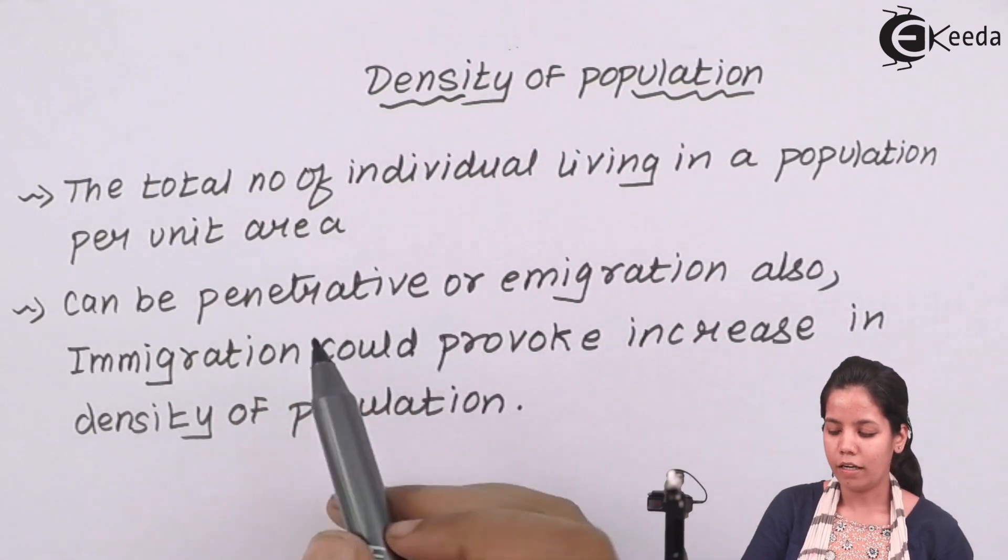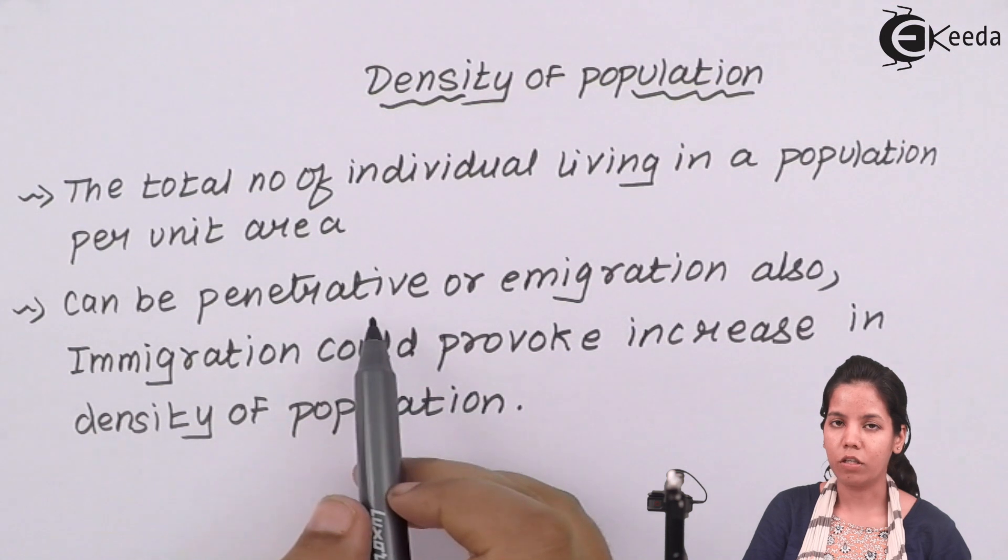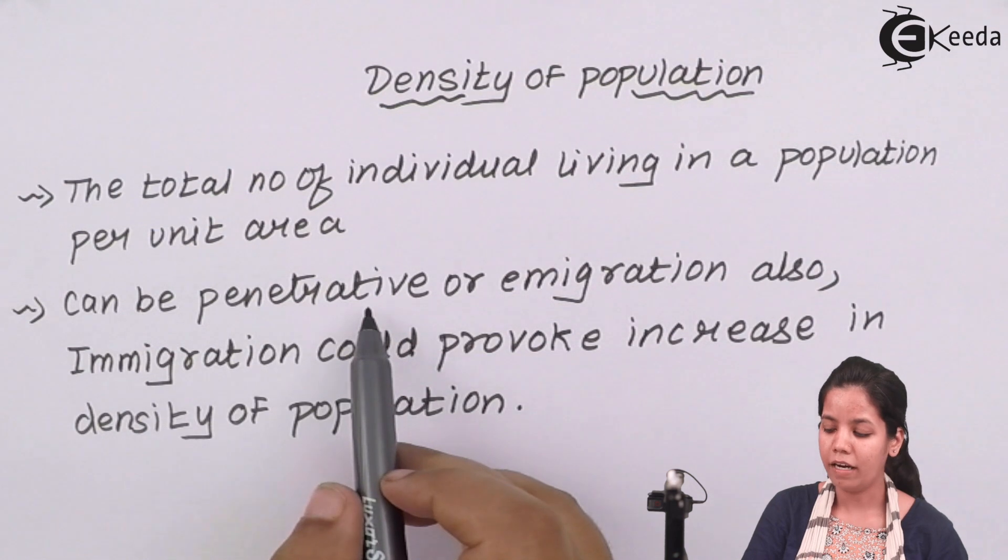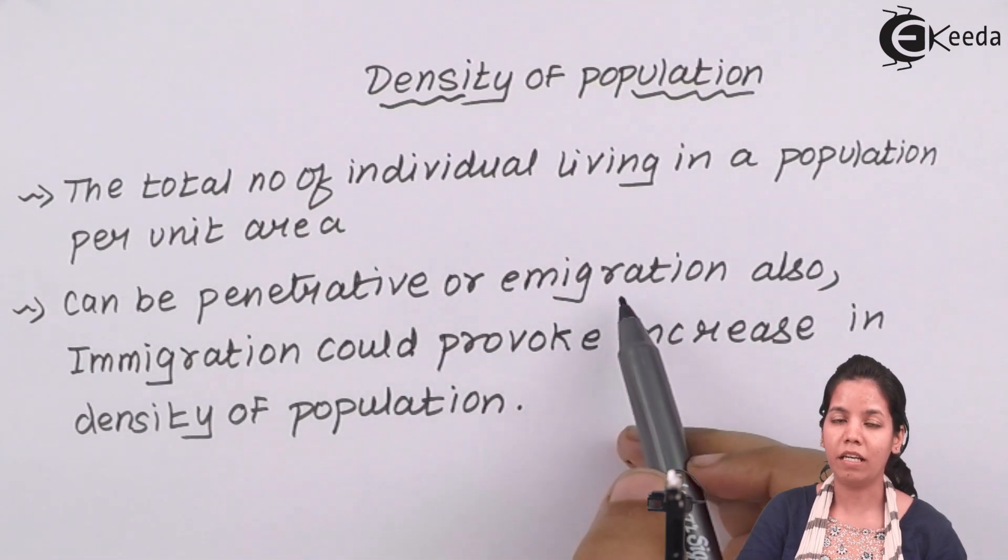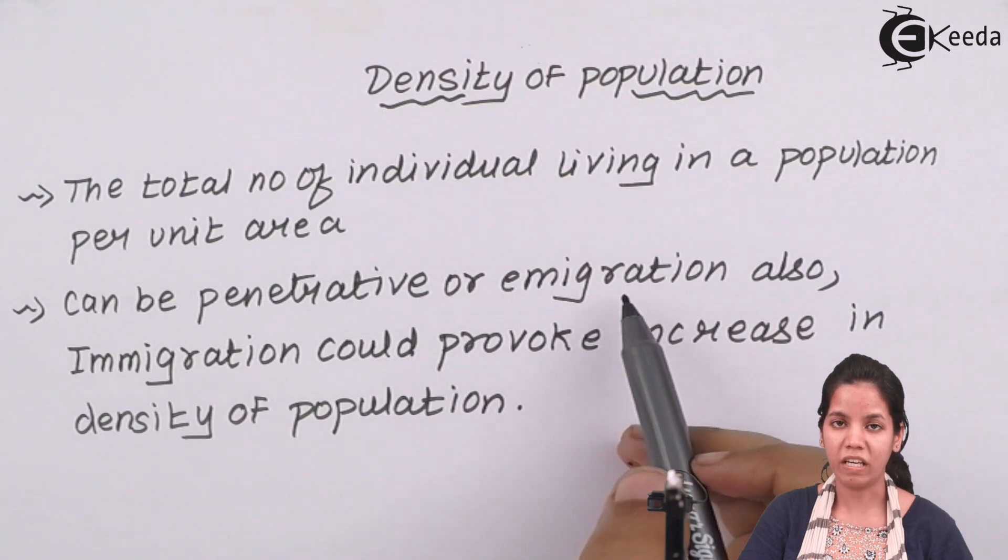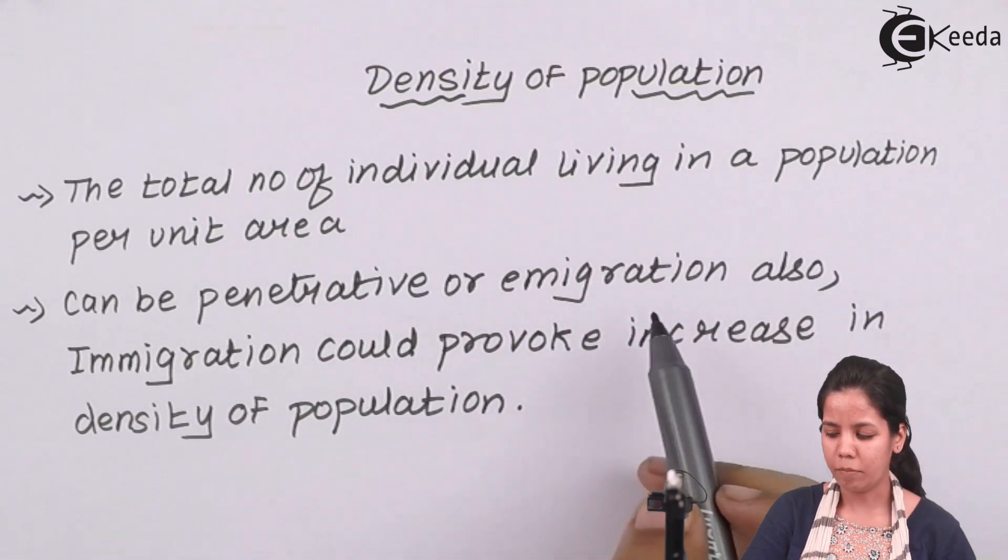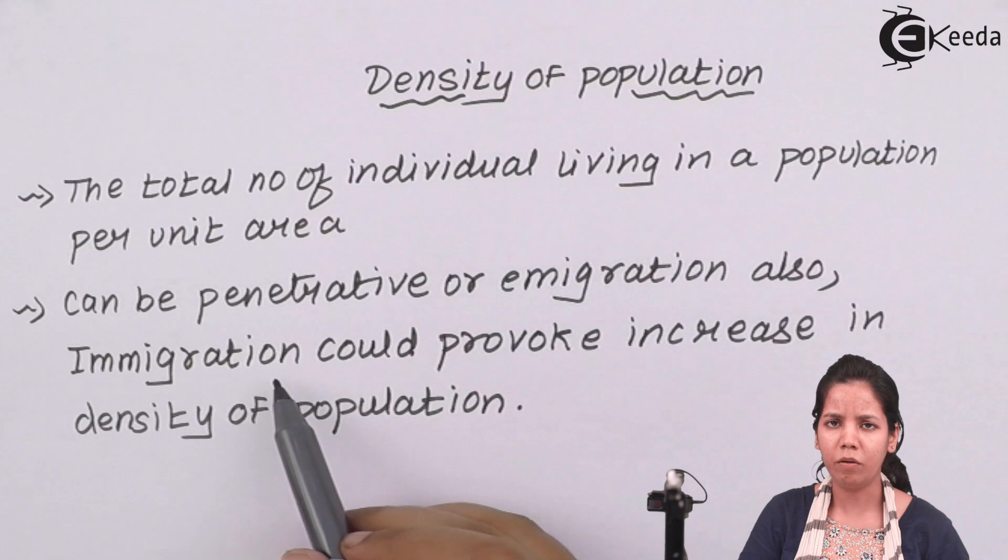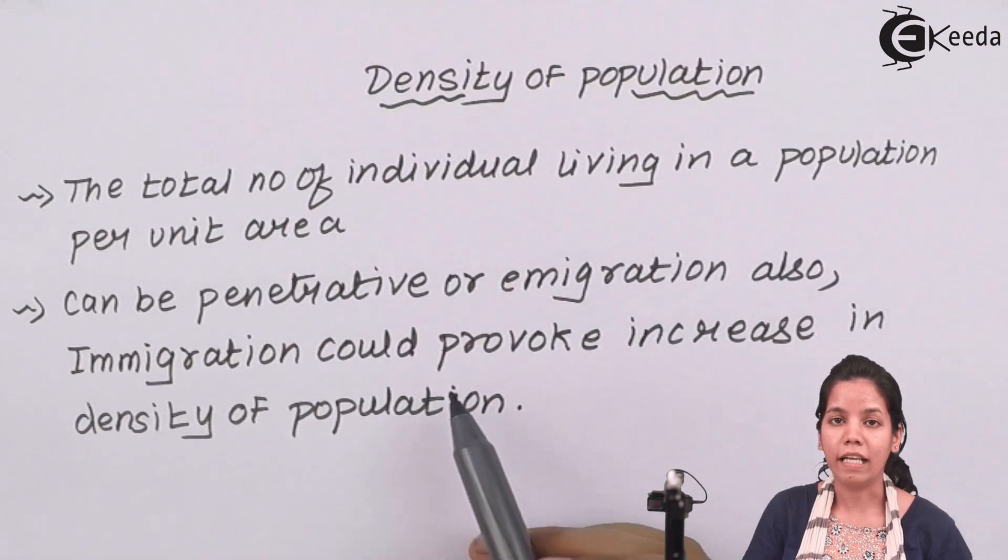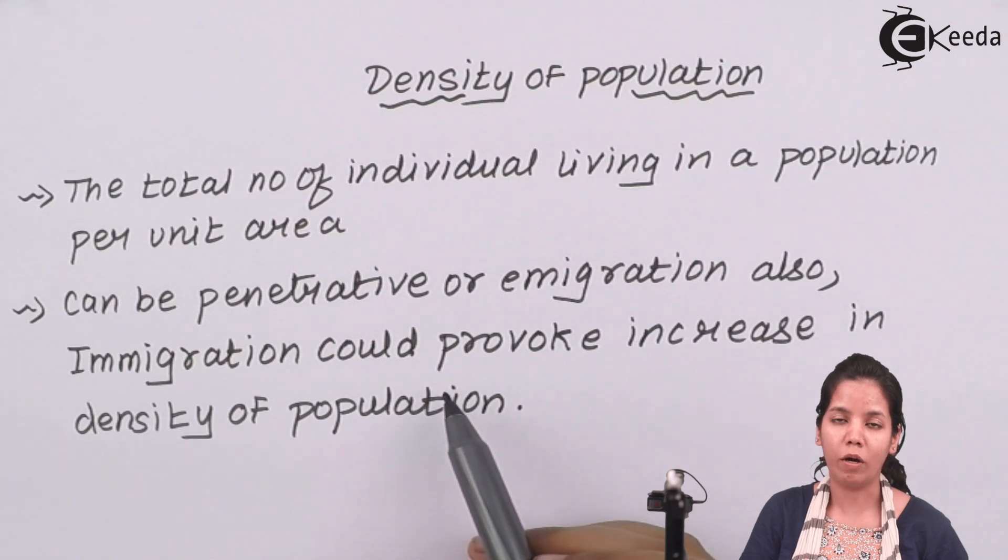Now density of a population in a particular state or country could be penetrative type. It could be immigration or emigration. Immigration is nothing but people moving in or just moving out from a particular place. Immigration or emigration could be one of those reasons for increase in density, or density could be provoked or increased due to one of these factors.